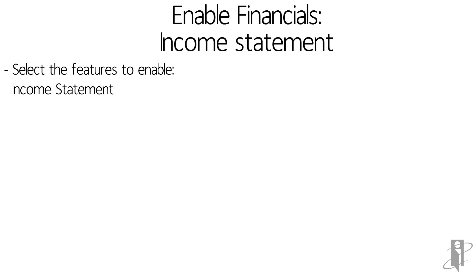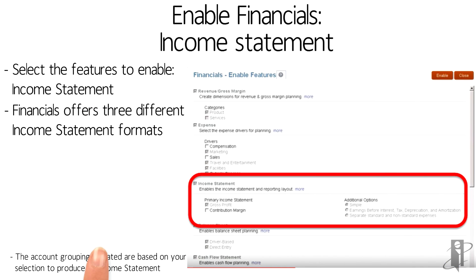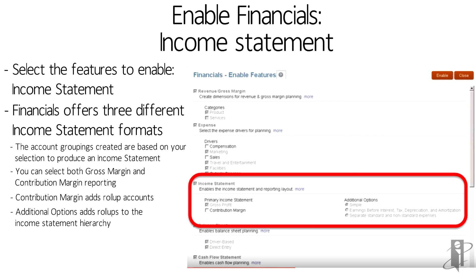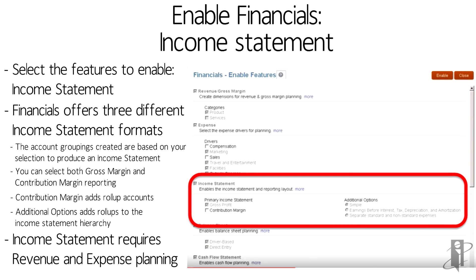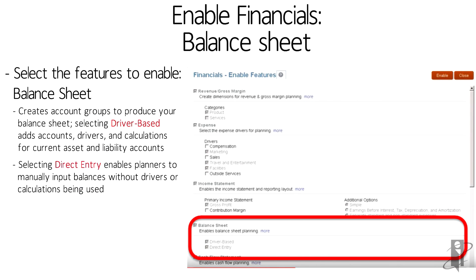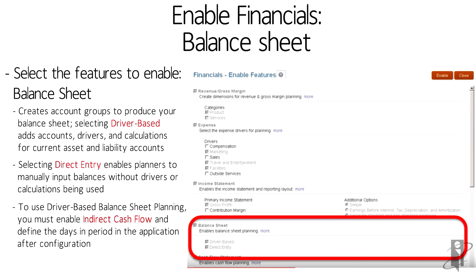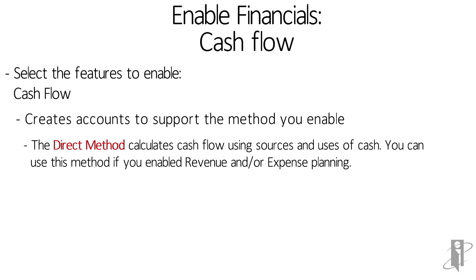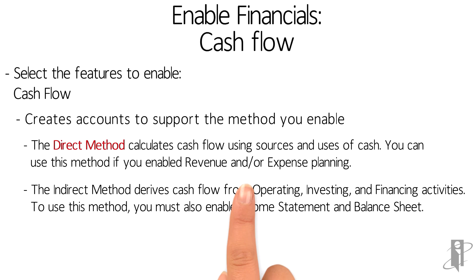From the income statement side, maybe I want to look at contribution margin, or do both gross margin and contribution. If I turn on something like contribution, it's going to add a lot of roll-up accounts. If I'm going to do income statement planning, clearly I need revenue and expense planning as part of that, otherwise there would be nothing rolling into my income statement. Balance sheet is pretty simple — do I want to go with direct entry, or do I want it to be driver-based, maybe flowing a portion off the rest of the income statement, or defining how many days are in the period? The simplest one is really cash flow — do I want to do direct method using sources and uses of cash, or do I want it to flow off my operating, investing, financing, income statement, and balance sheet portions and feed over to my cash flow? And that wraps up, in a nutshell, the financials framework.